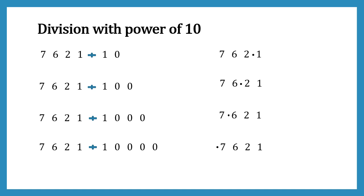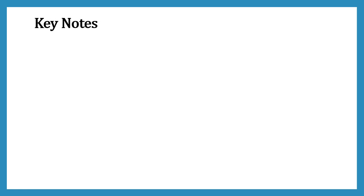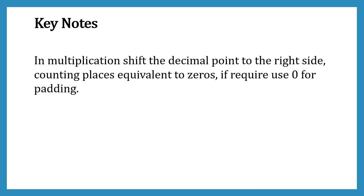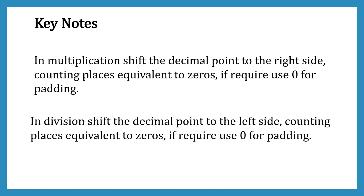So friends, those were a few examples through which I tried to explain decimal multiplication and division with powers of 10, and I hope I made the concept clear. For the key notes: in multiplication, shift the decimal point to the right by the number of zeros in the power of 10; in division, shift it to the left. If required, use zeros for padding. We've seen examples of both cases.